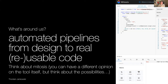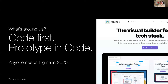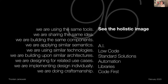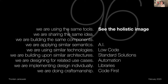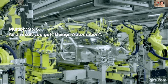Mitosis enables automated pipelines from design to reusable code — technology agnostic, not perfect but a beginning. Think about the possibility: if you have tokens, a pipeline, and technology in place, who needs Figma anymore? Prototyping code-first with real components and real design, without using Figma — maybe in two years. Combining all of this leads to the full automation pipeline and design automation.